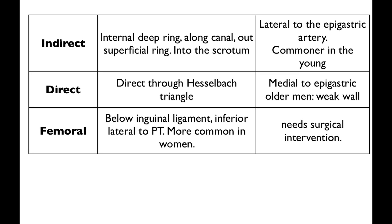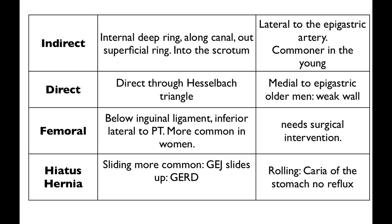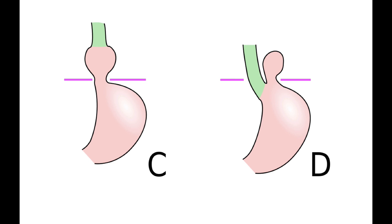Hiatus hernia comes up commonly and involves the esophagus and diaphragm. There are two types: sliding or rolling. Sliding is more common and is labeled here as C. What that means is that part of the distal esophagus has slid up through the diaphragm.